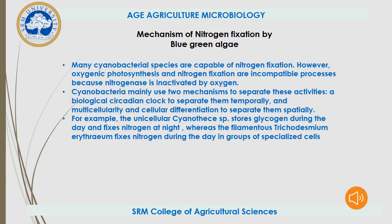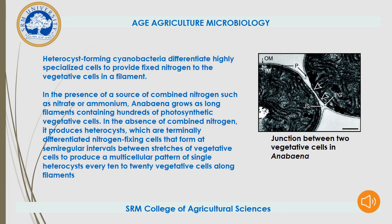For example, the unicellular Cyanobacteria species stores glycogen during the day and fixes nitrogen at night. Whereas the filamentous Trichodesmium erythraeum fixes nitrogen during the day in groups of specialized cells. Here, the heterocyst-forming cyanobacteria differentiate highly specialized cells to provide fixed nitrogen to the vegetative cells in a filament.